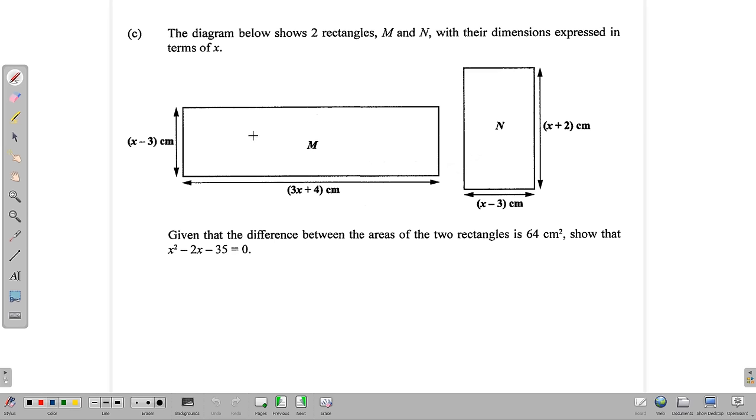So this question requires us to find the areas of these two rectangles, subtract them, and somehow at the end we should end up with this. So let's do that. x minus 3 times 3x plus 4 is the area for M. So x minus 3 times 3x plus 4 gives us 3x squared plus 4x minus 9x minus 12, which simplifies down to 3x squared minus 5x minus 12.